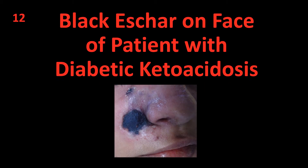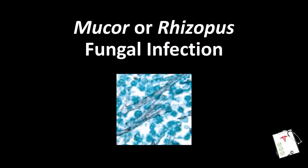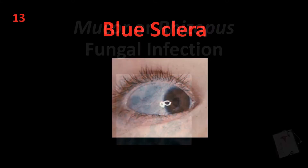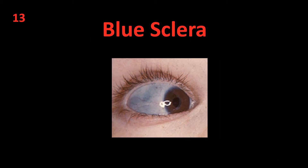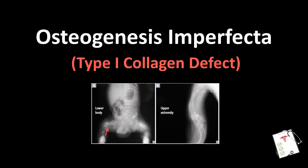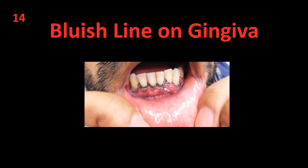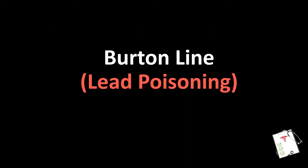Number 12: Black eschar on face of patient with diabetic ketoacidosis. Answer: Mucor or Rhizopus fungal infection. Number 13: Blue sclera. Answer: Osteogenesis imperfecta — type 1 collagen defect. Number 14: Bluish line on gingiva. Answer: Lead poisoning.